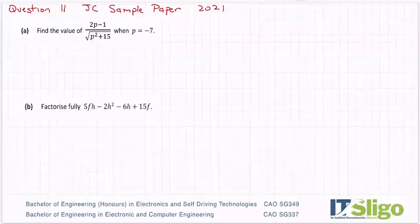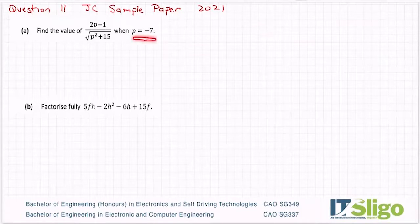Right, so question 11 on that sample paper from the department was the algebra question. Part A, find the value of 2p minus 1 over root p squared plus 15 when p is equal to minus 7. This is a substitution question where they've told you the value of this variable and you sub it in.